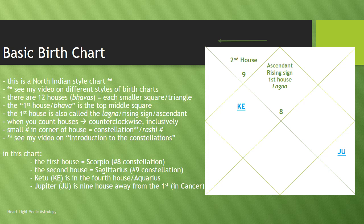And what constellation is Ketu going to be in? You count back from eight: eight, nine, ten, eleven — it's going to be in Aquarius. Now let's try Jupiter. We go back to the lagna, and now we're looking for Jupiter. Jupiter is indicated by JU — that's how I mark Jupiter. We start in the lagna: one. Lagna is one, we count backwards: two, three, four, five, six, seven, eight, nine houses away is where Jupiter is. So Jupiter is nine houses away from the lagna, or the first house. And which constellation is Jupiter going to be in? Jupiter is going to be in Cancer.